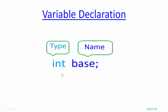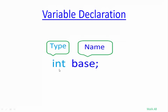Here we are declaring a variable and its name is 'base' and its type is int. This is the style of declaring a variable in Java: first you have to define the type of the variable — as you can see here its type is int — and then you give the name of that variable, which we are calling 'base'.